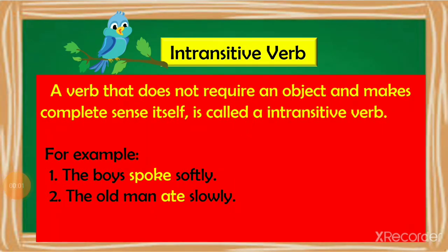The next type is intransitive verbs. Read the following sentences: the boys spoke softly; the old man ate slowly. In these two sentences, spoke and ate are the verbs, and these verbs do not require any object to complete the sense. So these are examples of intransitive verbs. A verb that does not require an object and makes complete sense by itself is called an intransitive verb. Intransitive verbs do not require an object, while transitive verbs require an object to complete the sense.